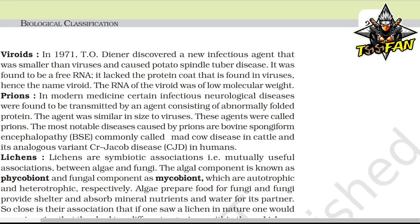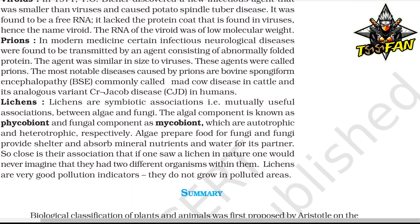Lichens are a symbiotic association — a mutually useful association between algae and fungi. The algal component is known as the phycobiont and the fungal component as the mycobiont, which are autotrophic and heterotrophic respectively. Algae prepare food for fungi, and fungi provide shelter and absorb minerals, nutrients, and water for their partner. So close is their association that one would never imagine they have two different organisms within them. Lichens are very good pollution indicators and do not grow in polluted areas.